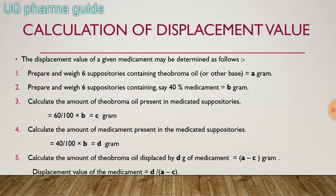Calculation of displacement value: The first step is to prepare and weigh six suppositories containing theobroma oil or other suppository base — we consider 1 gram per mold. Then prepare and weigh six suppositories containing 40% medicament.